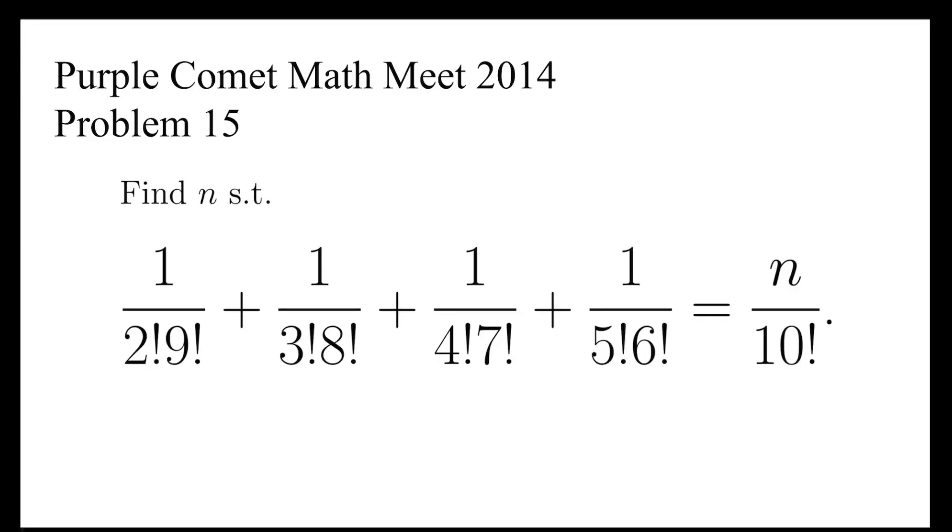This is the problem from the Purple Comet Math Meet 2014. Solve the equation of the sum of reciprocals of 2 factorial times 9 factorial, 3 factorial times 8 factorial, 4 factorial times 7 factorial, 5 factorial times 6 factorial equals n over 10 factorial.